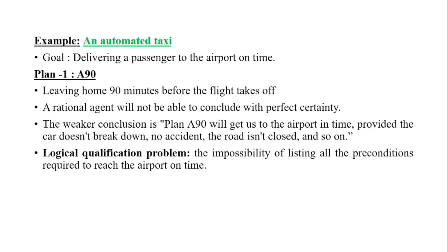Let's see an example — an automated taxi. The goal of an automated taxi is delivering a passenger to the airport on time. To achieve the goal, a plan named A-90 is created, that is, leaving home 90 minutes before the flight takes off and driving at a reasonable speed. The rational agent will not be able to conclude with perfect certainty that plan A-90 will get us to the airport in time, even though the airport is only 5 miles away. The weaker conclusion is: plan A-90 will get us to the airport in time, provided the car doesn't break down, there is no accident, and the road isn't closed. We cannot infer that the plan is successful because none of the assumptions can be made with certainty. This is called the logical qualification problem — that is, the impossibility of listing all the preconditions required to reach the airport on time.